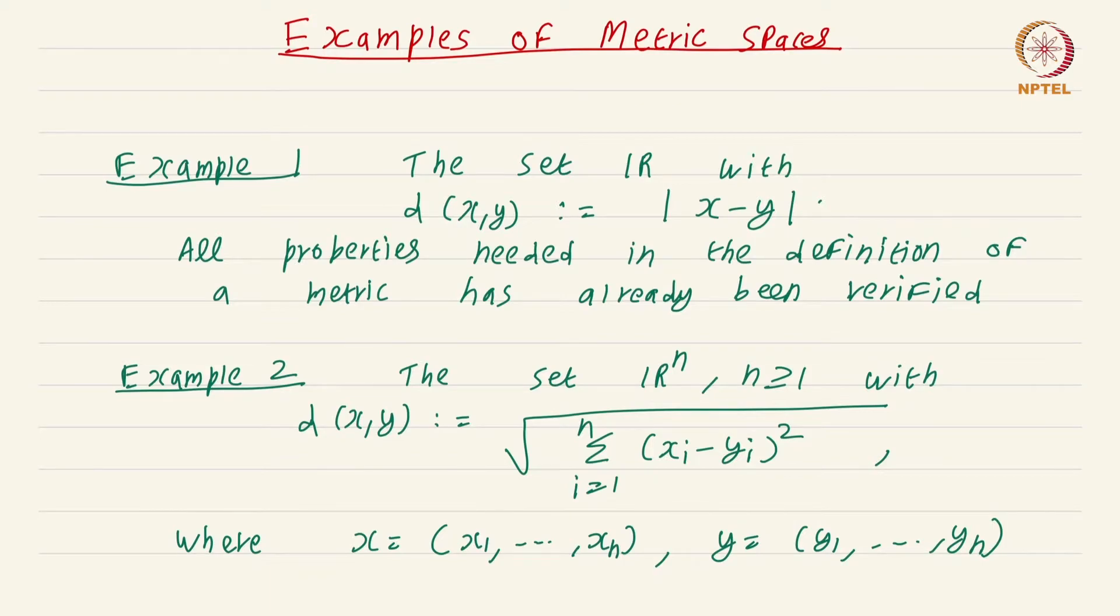This set R^n along with this metric is called Euclidean space. Before that, we have to check that that definition in fact satisfies all the three properties of a metric space. The only thing that is difficult is the last property. Let me just make a remark that the last property, the triangle inequality, will be checked in the future.